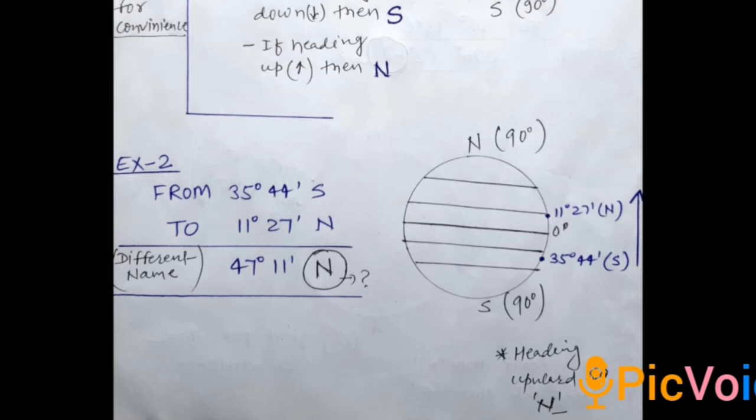How about the direction now? Again, we are going from 35 degree 44 minute South, so it will be lying in the South Hemisphere somewhere, as I have put out here in the diagram. And we are moving to 11 degree 27 minute North. So basically we are going from South to North. It is in upward direction.